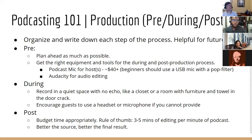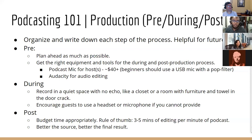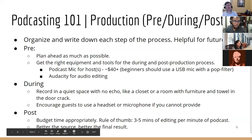For post-production, budget time appropriately. The rule of thumb is three to five minutes of editing per minute of a podcast. So if you have a 20-minute podcast, at most it should take you 100 minutes to edit. Once you get into the swing of things, the better the source, the better the final result. People sometimes say 'I'll just handle it in post-production,' but if there's too much echo or background noise, there's only so much you can do.